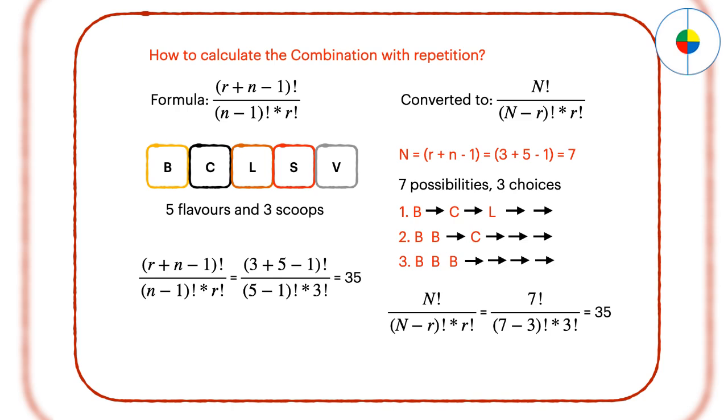Then, you have 3 choices because you need to make 3 scoops. We can assume capital N equals r plus n minus 1, so the combination with repetition has been converted to a combination without repetition.